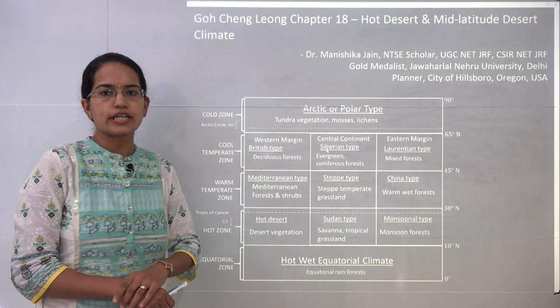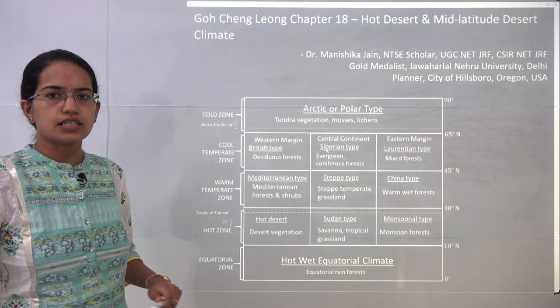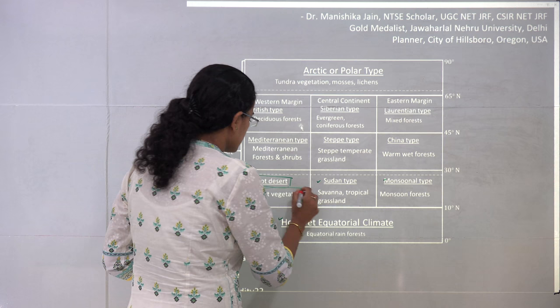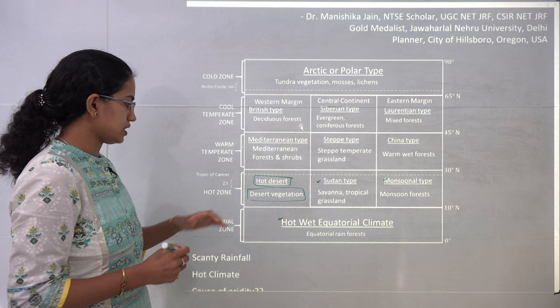Welcome back. We will start with Goh Cheng Leong Chapter 18 that talks about hot desert and the mid-latitudinal deserts. We have talked about the various regions under which we have classified the world. We have already discussed the hot wet equatorial, Sudan type and monsoon type. Today what we would be doing is the hot desert with the specificity of desert type of vegetation, which is also known as xerophytic vegetation.